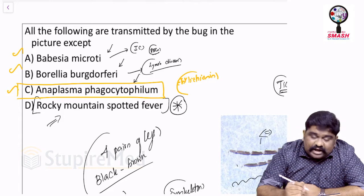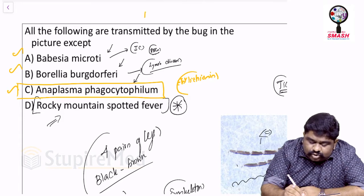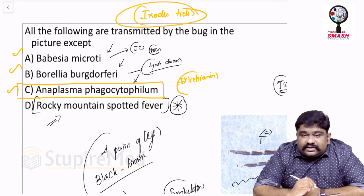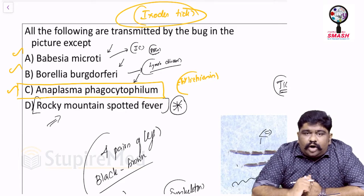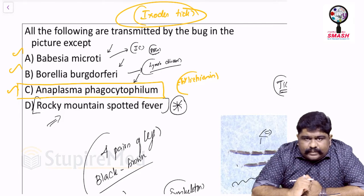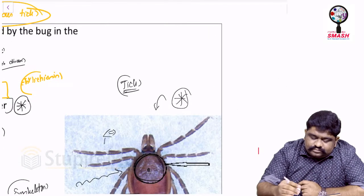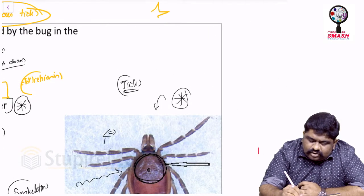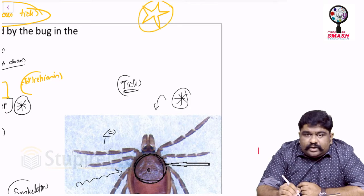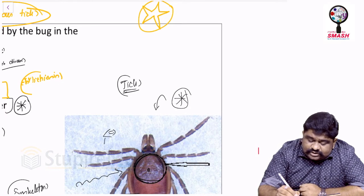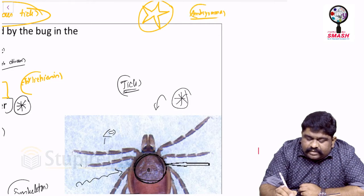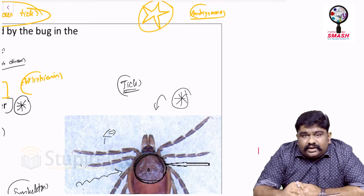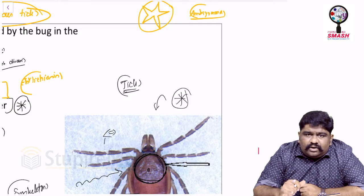Let me repeat: Babesia, Borrelia, and Anaplasma can all be spread by Ixodes. The tick you saw was Ixodes; other ticks like American dog tick and brown dog tick will not look like Ixodes. If the ornamentation looks like a satellite, it is called satellite ornamentation and can be seen in Amblyomma or Dermacentor — another kind of tick that looks like a star tick.